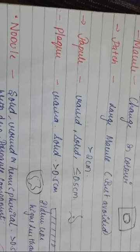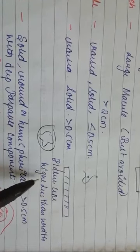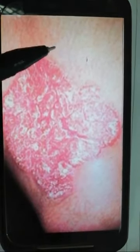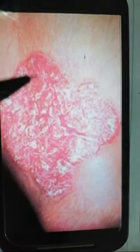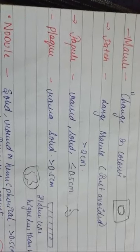The fourth term is plaque. It is raised and solid, more than 0.5 centimetres, and the height is less than the width. So if you observe the diagram, this is a raised, solid lesion more than 0.5 centimetres where the height is less than the width. To summarize: papule is raised, solid, less than 0.5cm; plaque is raised, solid, more than 0.5cm.